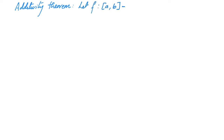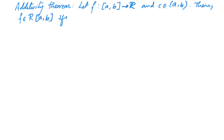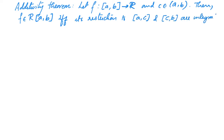We will now prove that the integral is an additive function of the interval over which the function is integrated. More precisely, let f be a function from [a,b] to ℝ and c be a point in the open interval (a,b). Then f is Riemann integrable if and only if its restrictions to [a,c] and [c,b] are integrable. Moreover, in this case, the integral from a to b of f equals the integral from a to c of f plus the integral from c to b of f.